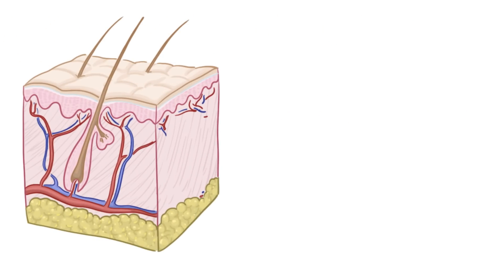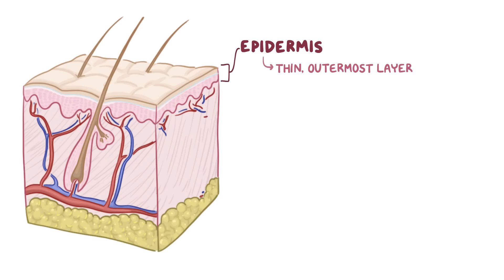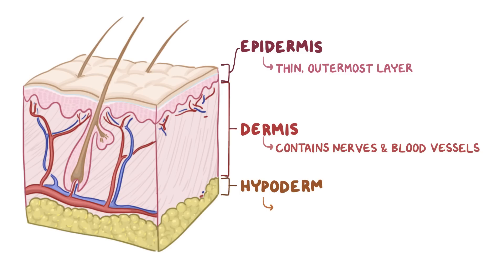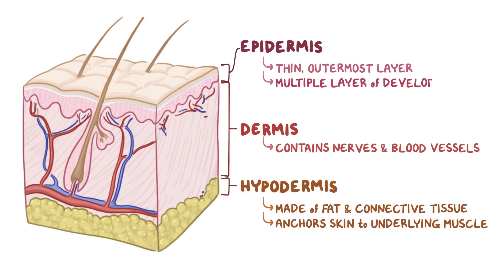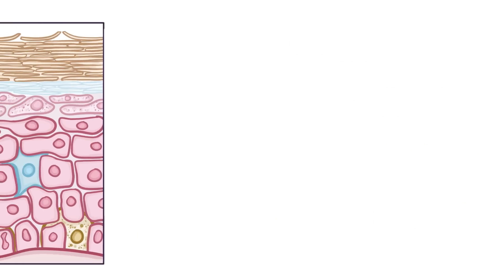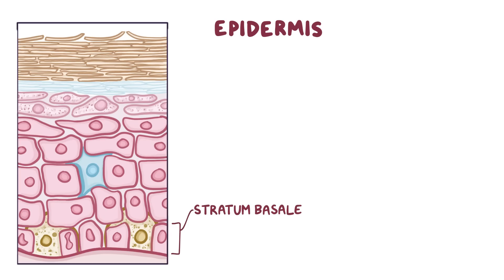The skin is divided into three layers. The epidermis forms the thin outermost layer of skin. Underneath is the thicker dermis layer that contains the nerves and blood vessels. And finally there's the hypodermis, which is made of fat and connective tissue that anchors the skin to the underlying muscle. The epidermis itself is made of multiple layers of developing keratinocytes, which are flat, pancake-shaped cells named for the keratin protein they're filled with. Keratinocytes start their life at the lowest layer of the epidermis, called the stratum basale, or basal layer, which is made of a single layer of stem cells that continually divides and produces new keratinocytes.